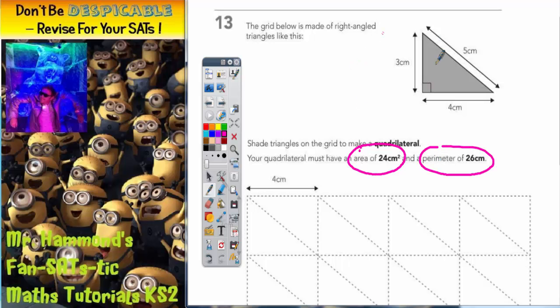So the first thing to do would be to work out the area of one triangle, and then we would know how many triangles we would need to shade. What is the area of one triangle?